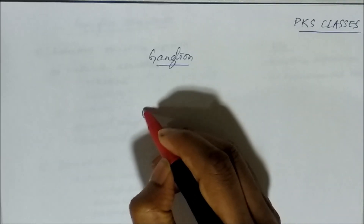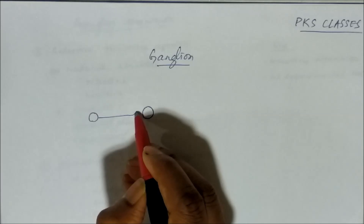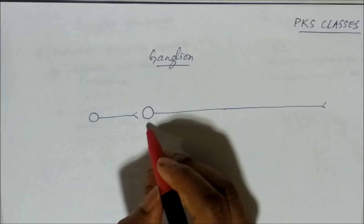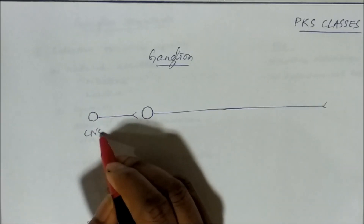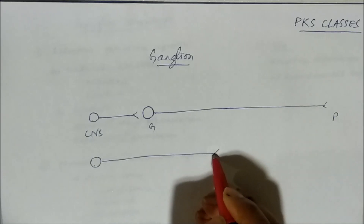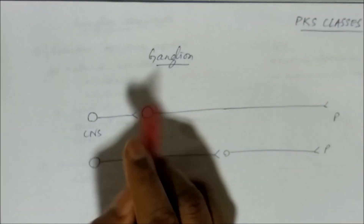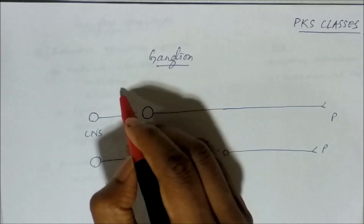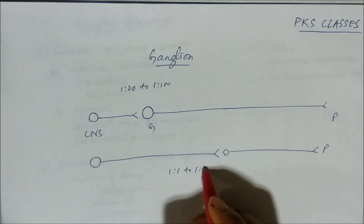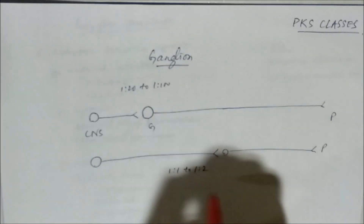A ganglion is the mass of cell bodies outside the CNS. From CNS, one neuron goes to ganglia, then from ganglion one goes to the periphery. If it is sympathetic ganglia, it is near to CNS; if it is parasympathetic ganglia, it is away from CNS. The preganglionic to postganglionic fiber ratio is 1:20 to 1:100 for sympathetic and 1:1 to 1:2 for parasympathetic. So this ganglion is a mass of cell bodies and many neurons go to different places from it.